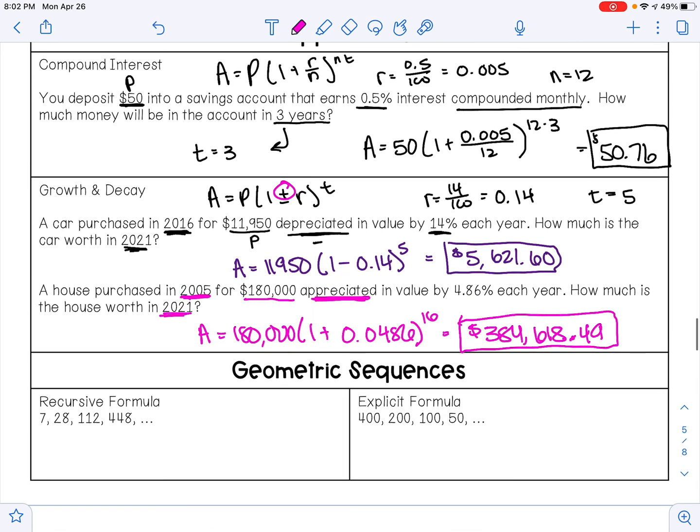And then the next thing that we learned about was geometric sequences. Geometric sequences is when you are multiplying or dividing by the same number every time. Remember that a sub 1 is your first term and r is your common ratio. That's how much you're multiplying or dividing by each time.